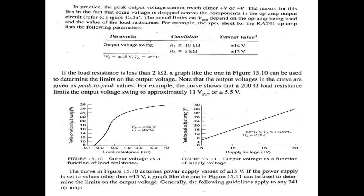As load resistance increases, the peak-to-peak output voltage varies. In another scenario, we will vary the supply voltage. The supply voltage is changing, and we can see that at 20V supply, the peak-to-peak voltage is 36V, so at 20V supply our output will be 18V.